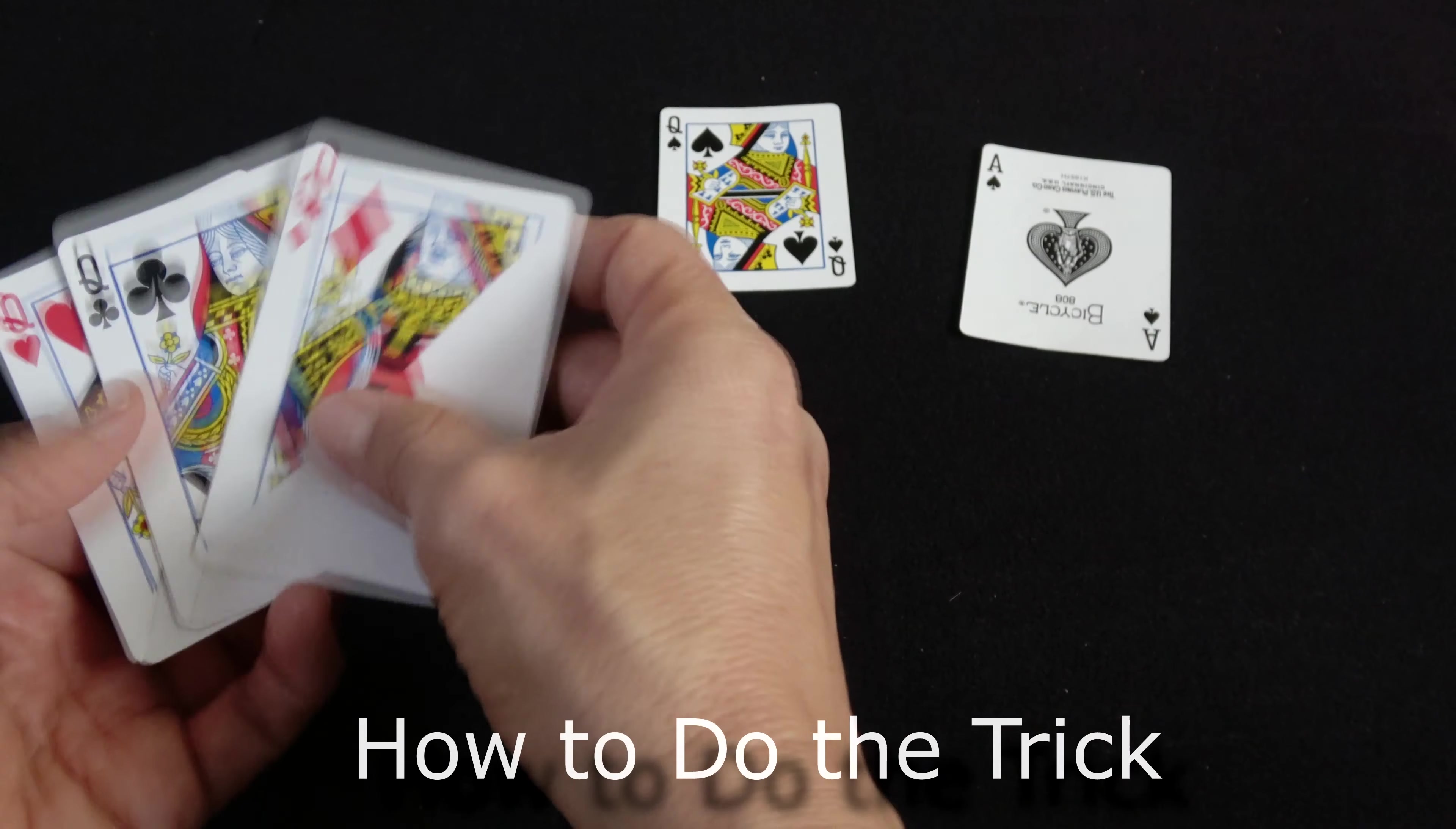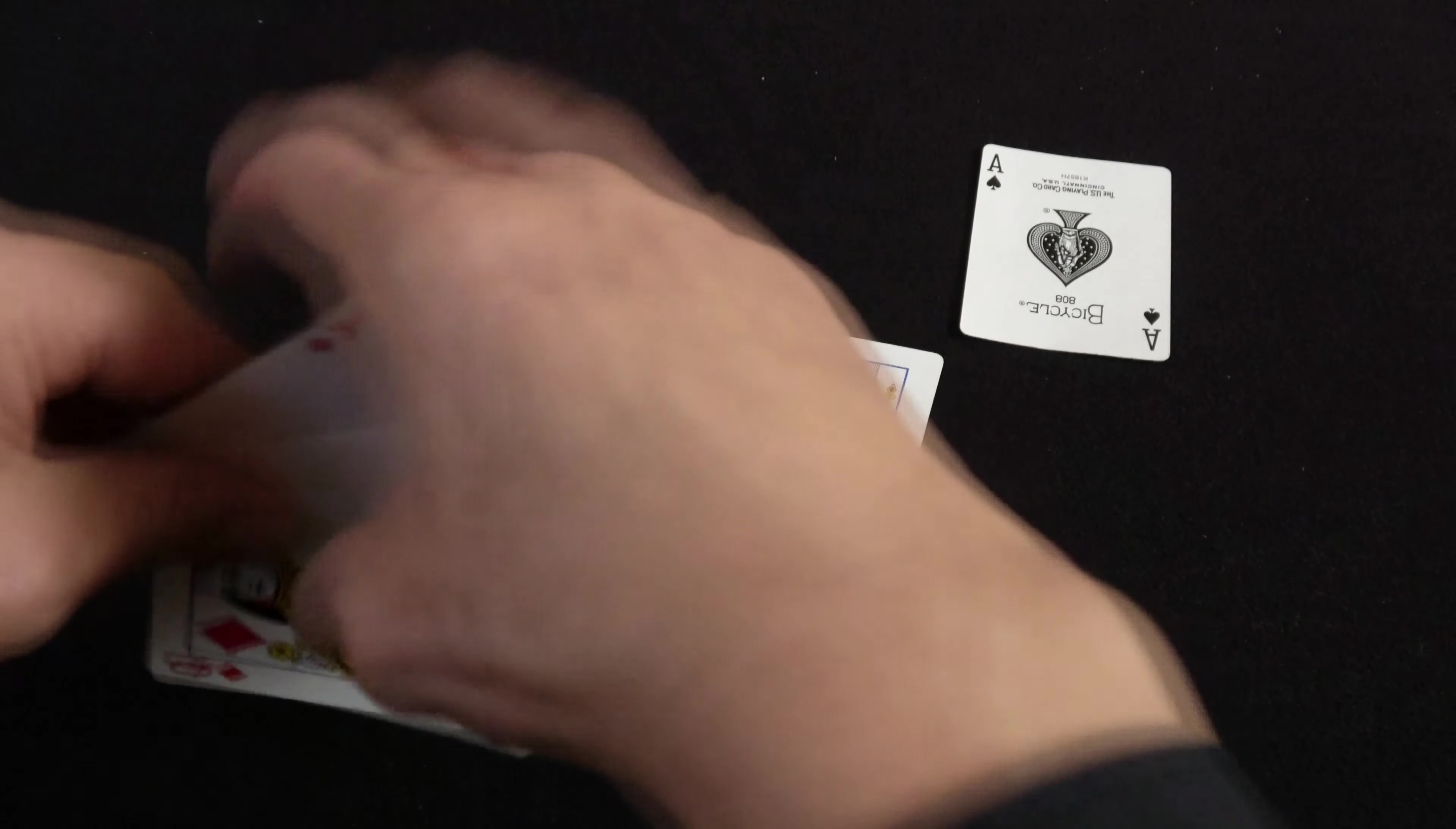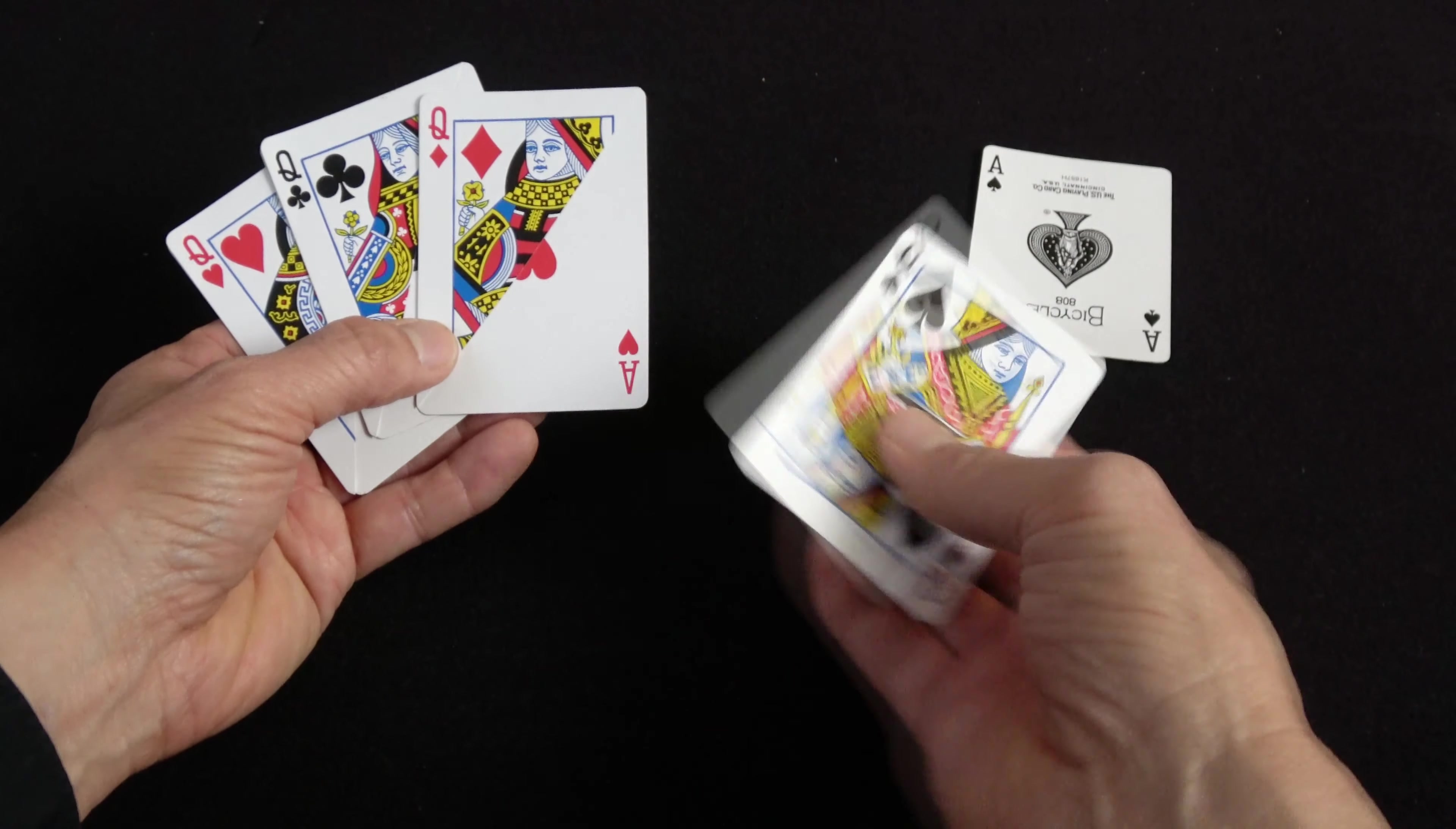Now you're ready to begin the trick. You can go either direction. You have three gimmicked cards. Let's say we want to turn the four queens into aces.